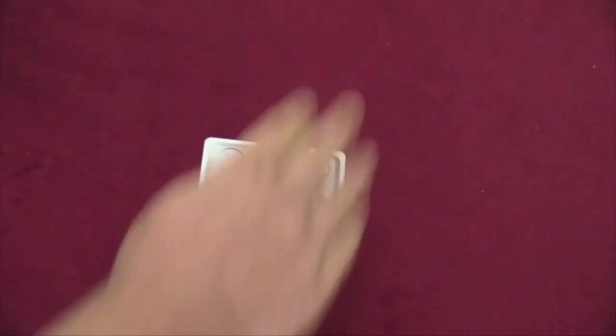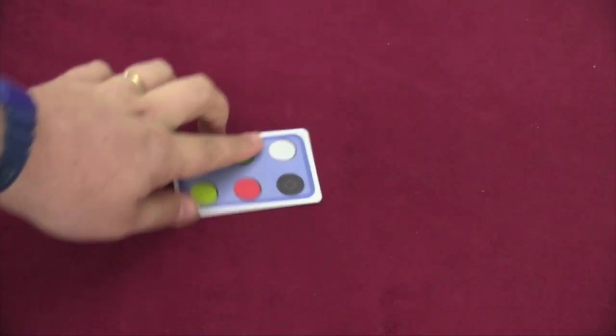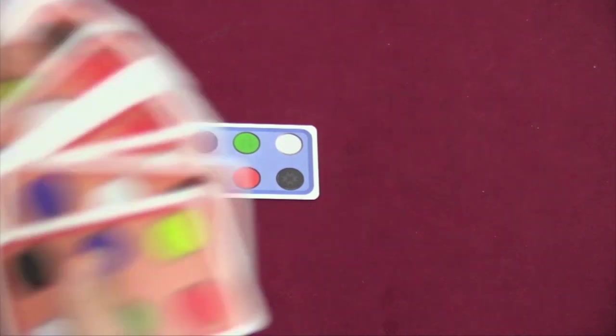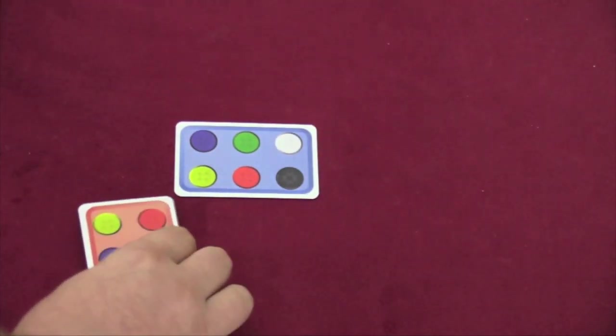So each player is going to get a deck. The blue player is going to put one of their cards in the middle of the table, and they're going to say go and turn that card face up. Everybody then is going to be trying to play cards as fast as they can from their big hand of cards on top of this card. They have to match at least two dots.